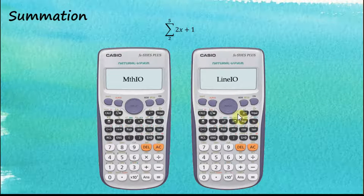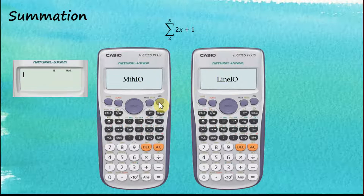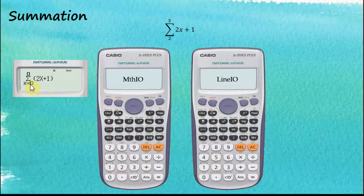The last operation is summation. For Math Input, we insert the container using shift summation. The lower limit is two and we enter that, navigate through the subcontainers, and the upper limit is five. Press equal to get the answer.